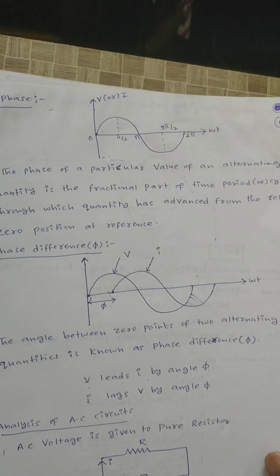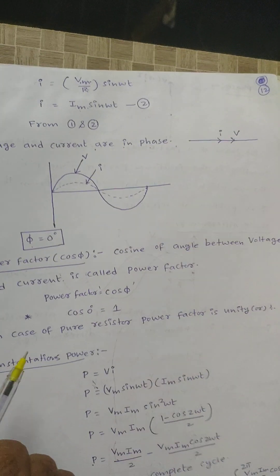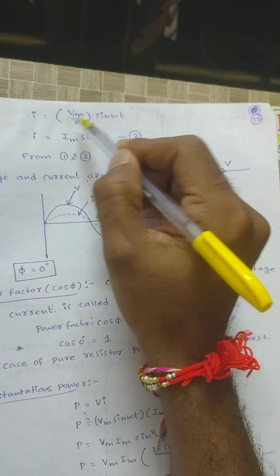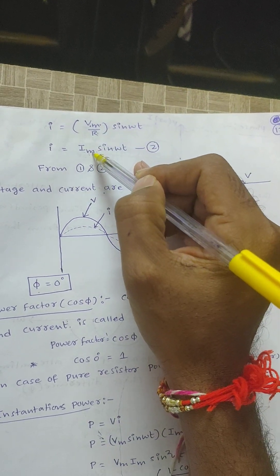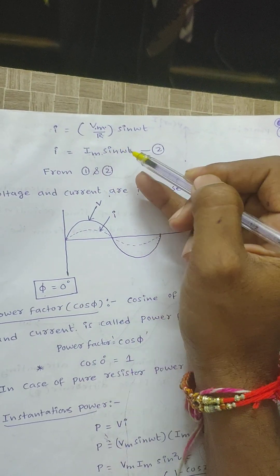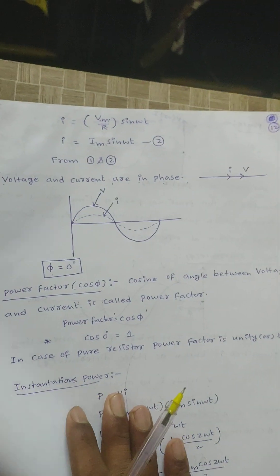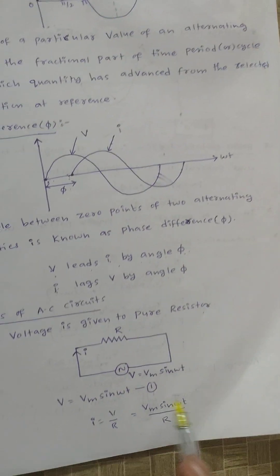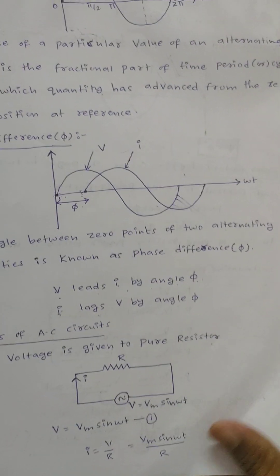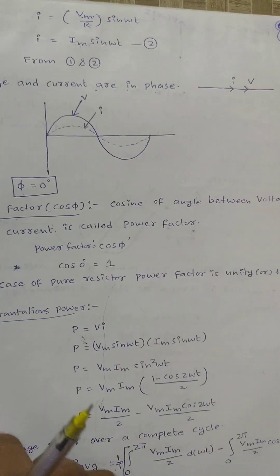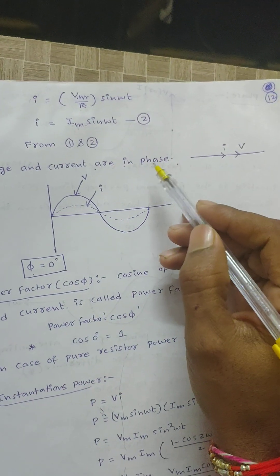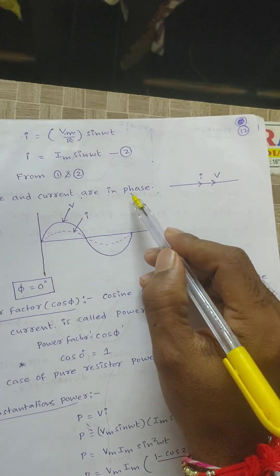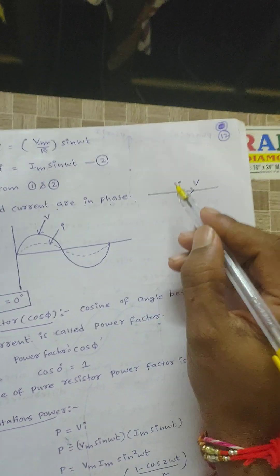Current I equals V divided by R, that is Vm sin(ωt) divided by R. This can be written as (Vm/R) × sin(ωt). Since Vm/R is Im, we get I = Im sin(ωt). From equations 1 and 2, voltage and current are in phase — there is no phase angle difference between voltage and current.